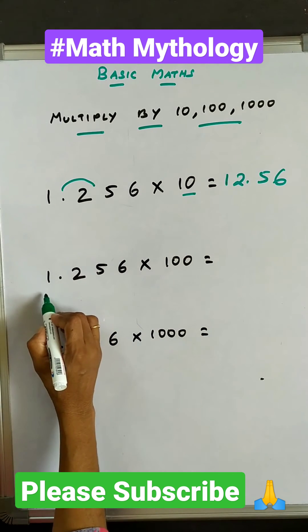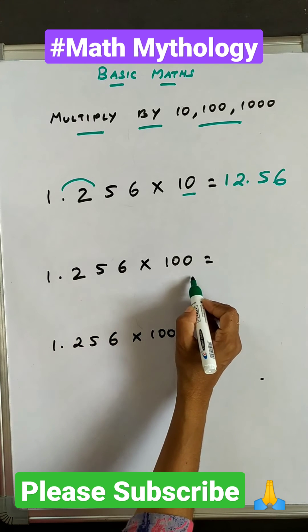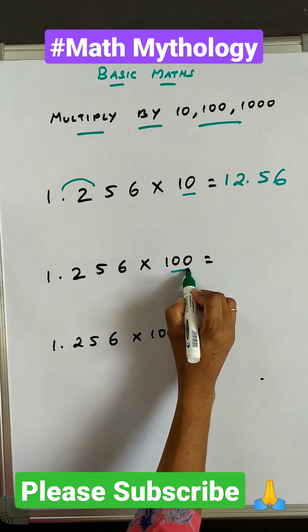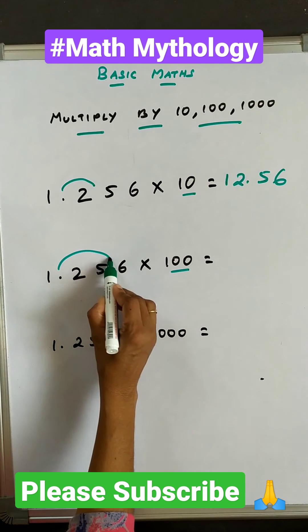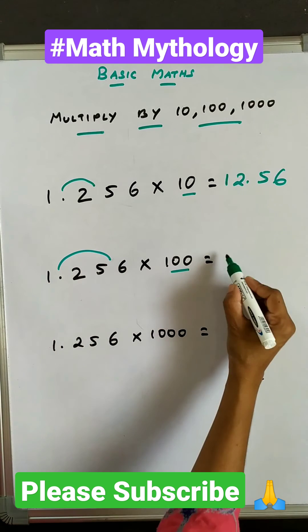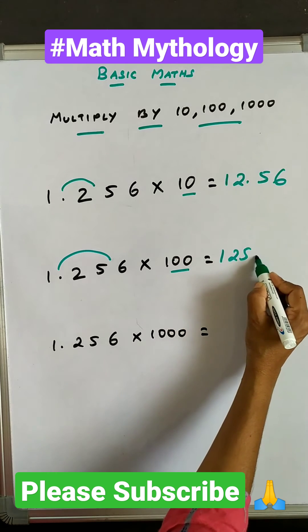Same way, when we multiply 1.256 by 100, in 100 we have two zeros. So move the decimal number towards the right after two numbers. We get 125.6.